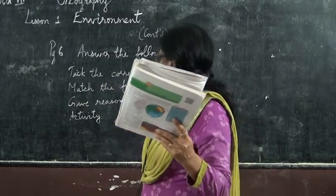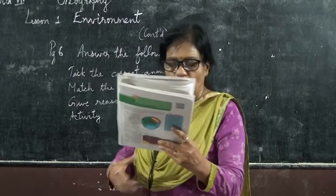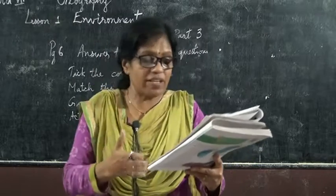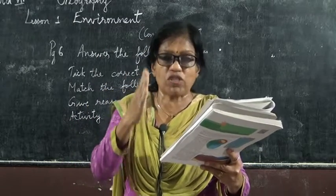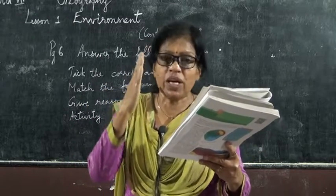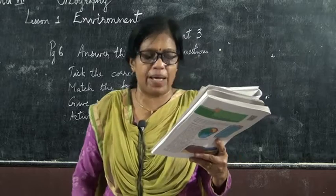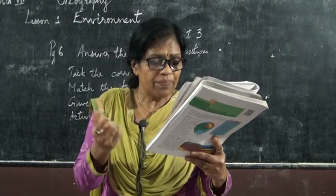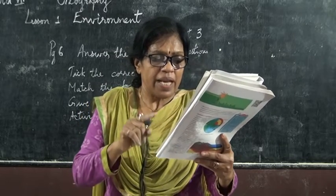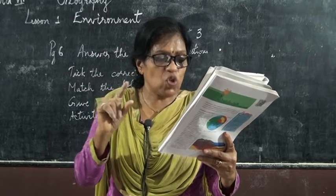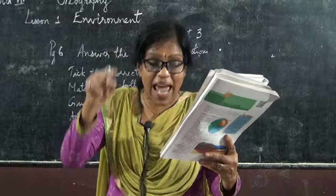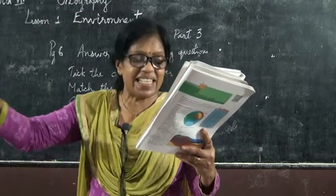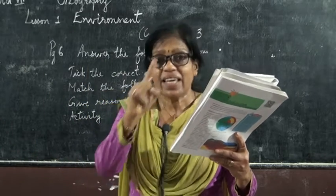Now next is match the following. Biosphere, atmosphere, hydrosphere, environment — one side. Biosphere is what? Biosphere is a narrow zone where land, water, and air interact — that matches E.